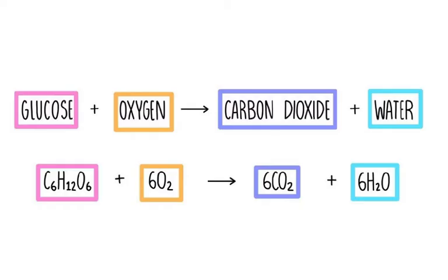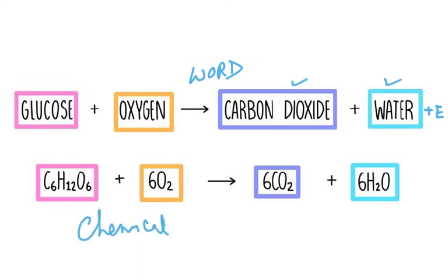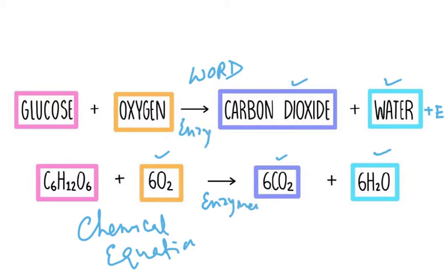The word equation for aerobic respiration is: glucose plus oxygen gives you carbon dioxide plus water plus energy released. The balanced chemical equation is C₆H₁₂O₆ plus 6O₂ gives you 6CO₂ and 6H₂O. Remember that enzymes are needed for this reaction, even though we don't write them in the equation.